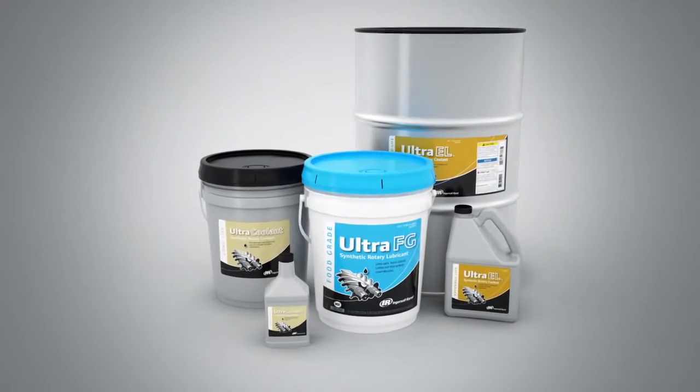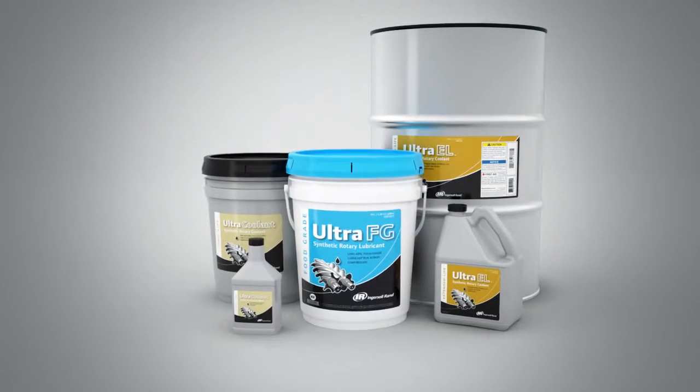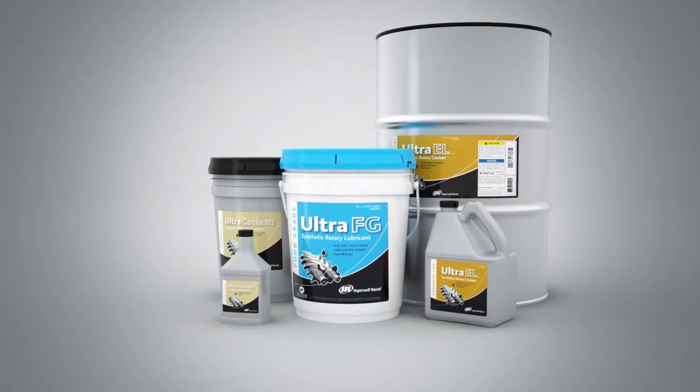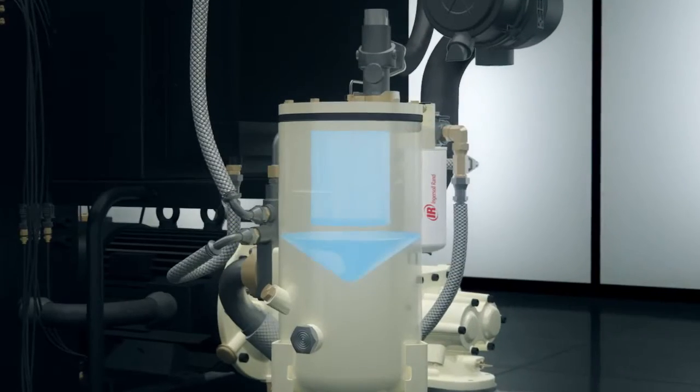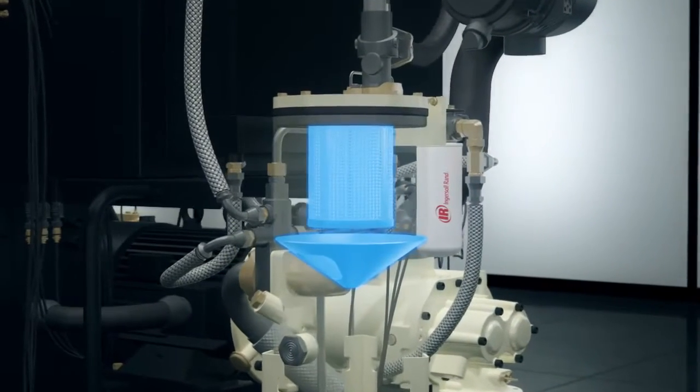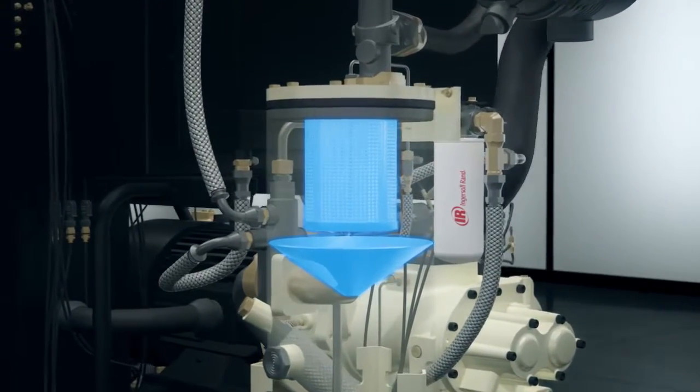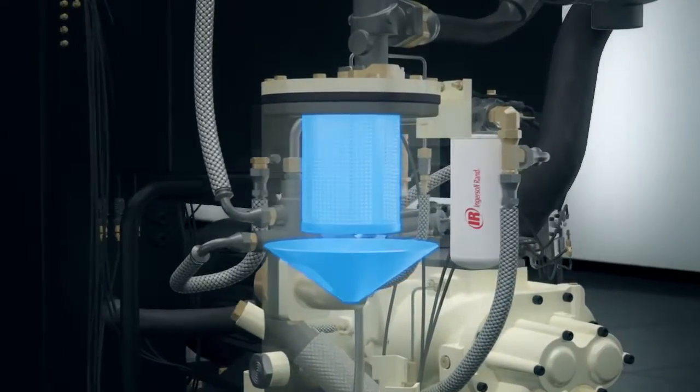Our Ultra series of lubricants not only reduces change-out frequency by up to 50%, but are also available in food grade where cleanliness and hygiene are as important as performance. And the three-stage separation system with conical baffle also extends service life by delivering air with less than three parts per million of lubricant.